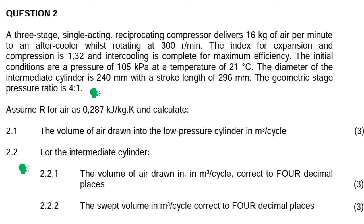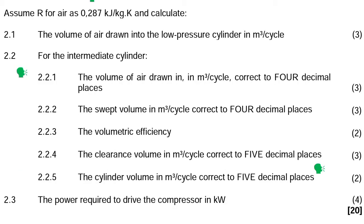The questions are: Question 2.1 — the volume of air drawn into the low pressure cylinder in cubic meters per cycle. 2.2.1 — the volume of air drawn in cubic meters per cycle correct to 4 decimal places. 2.2.2 — the swept volume in cubic meters per cycle correct to 4 decimal places. 2.2.3 — the volumetric efficiency. 2.2.4 — the clearance volume in cubic meters per cycle correct to 5 decimal places. 2.2.5 — the cylinder volume in cubic meters per cycle correct to 5 decimal places. 2.3 — the power required to drive the compressor in kilowatts.